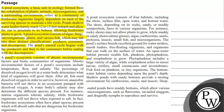A pond's ecosystem consists of abiotic environmental factors and biotic communities of organisms. Abiotic environmental factors of a pond ecosystem include temperature, flow, and salinity. The percentage of dissolved oxygen levels in a water body determines the kind of organisms that will grow there. Fish need dissolved oxygen in order to survive; however, anaerobic bacteria will not thrive in an ecosystem pumped with dissolved oxygen.